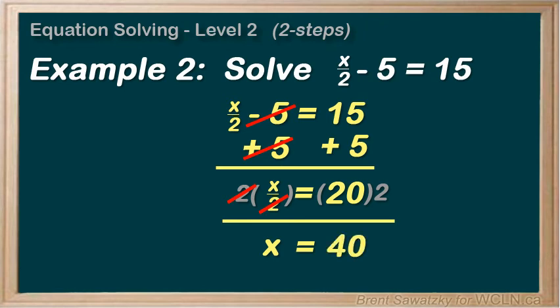Now, we can stop and see if our process worked. x over 2 minus 5 equals 15. Replace the x with empty brackets, and substitute in our 40. And see what we have. 40 divided by 2 equals 20, minus 5, and indeed that equals 15. Confirmed.